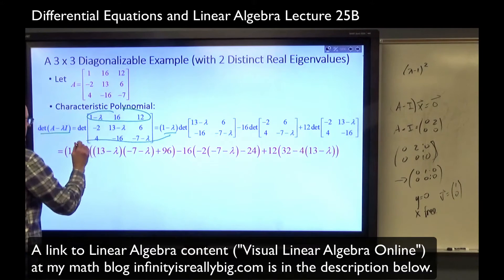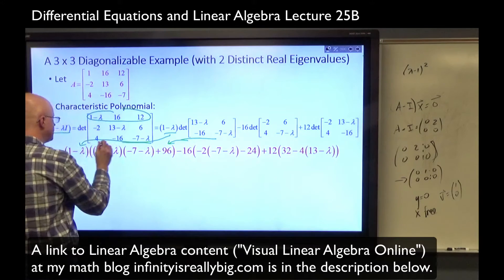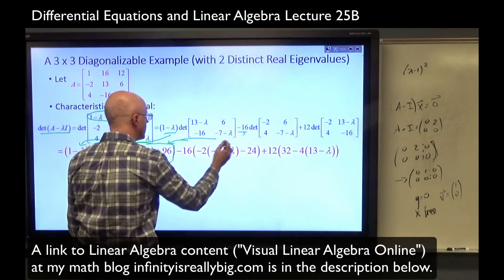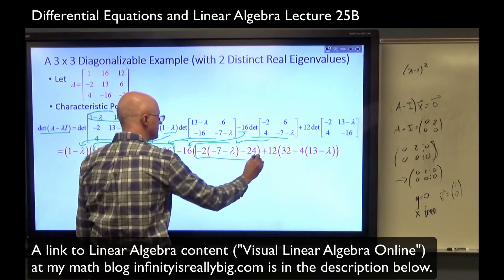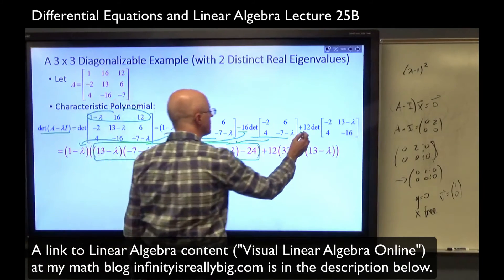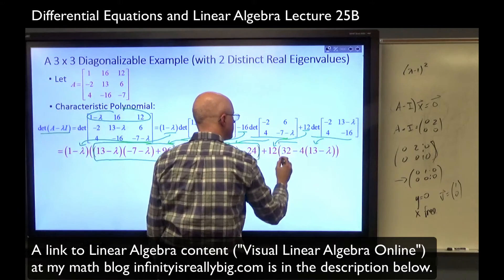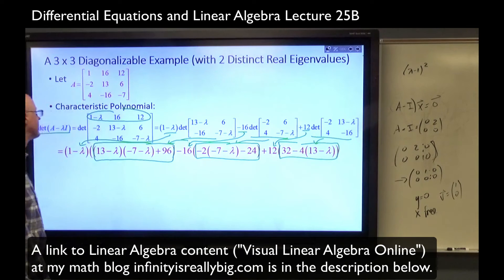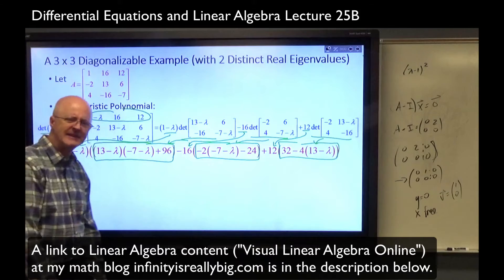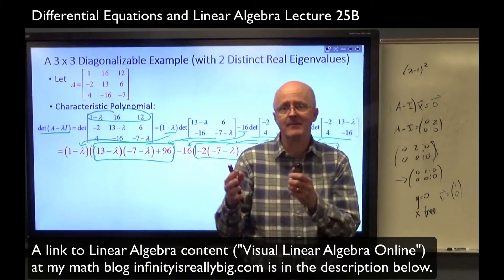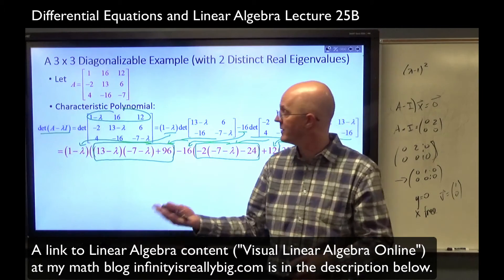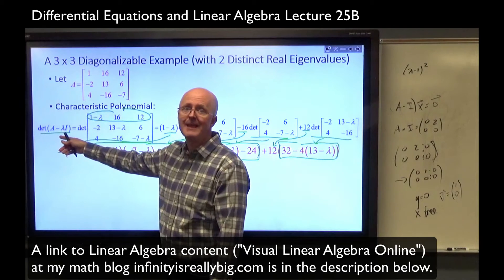Those are all 2×2 matrices, easy to quickly take the determinants of. I get a (1 minus lambda) factor. The determinant gives the entire thing inside parentheses. 16 times 6 is 96, and I'm subtracting negative 96, which means I'm adding 96. I did take time to double and triple check things, and I'm pretty sure there are no mistakes. Our goal is to find the eigenvalues by factoring this cubic as (lambda minus something) times (lambda minus something else) times (lambda minus something else), possibly with a coefficient in front.